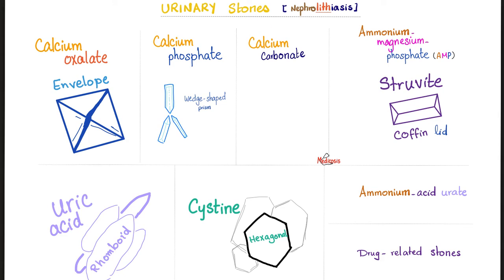What types of kidney stones do we have? The most common are calcium kidney stones, of which the most common is calcium oxalate. Then we have calcium phosphate, calcium carbonate, ammonium magnesium phosphate — also known as triple phosphate, struvite stones, or staghorn calculi. We have urate or uric acid stones, cystine stones, and others such as ammonium acid urate or drug-related stones.